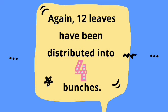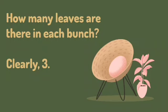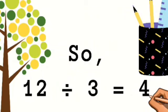Again, 12 leaves are distributed into 4 bunches. How many leaves are there in each bunch? So we can clearly see there are 3 leaves in each bunch. So 12 divided by 3 is equal to 4.